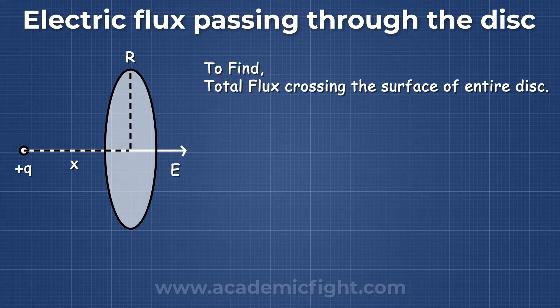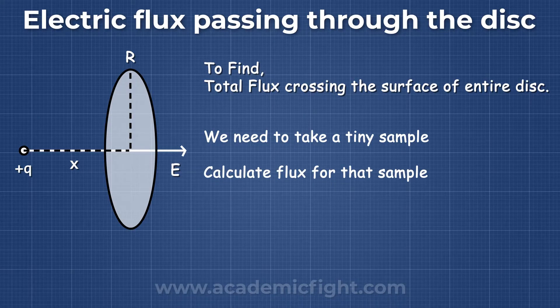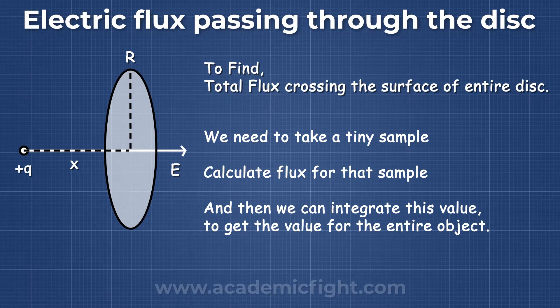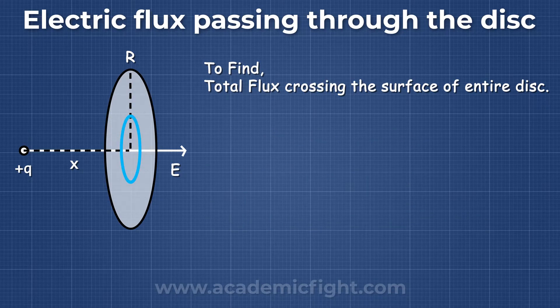Now, as we know from this type of examples that to calculate for the entire disc, we need to take a tiny sample, calculate for that sample, and then integrate it to get the value for the entire object. In the case of the disc, we take a thin ring as a sample element.